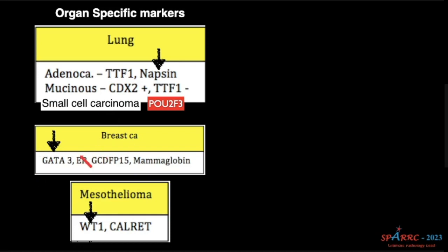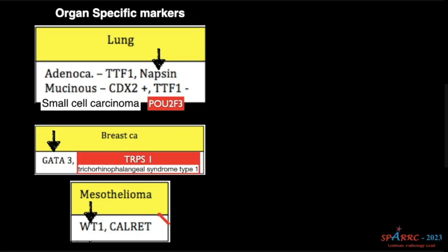For breast, again it is GATA-3. For mesothelioma, we talk about WT-1 and calretinin — these are all of myoepithelial cell origin. There is a specific marker now for malignant mesothelial cells, we will see it in a minute. And for breast cancer, now we have a very good marker that will be positive in malignant breast lesions: TRPS-1, trichorhinopharyngeal syndrome type 1. This is a new marker — remember it is a nuclear marker.